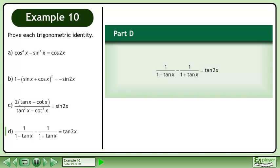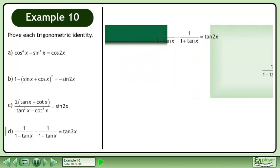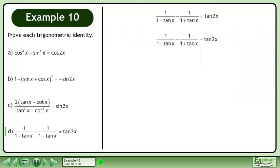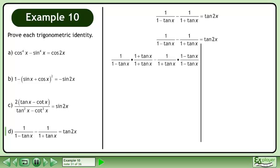In Part D, prove that 1 over 1 minus tan x minus 1 over 1 plus tan x equals tan 2x. Rewrite the statement and draw a line. Get a common denominator.